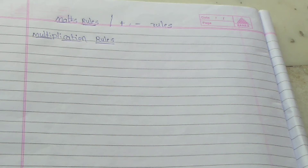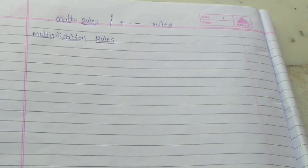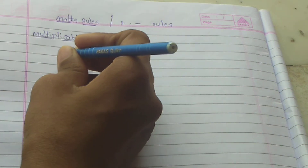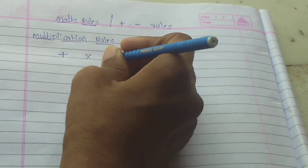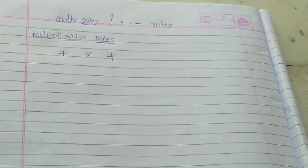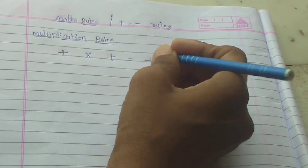Subscribe to my channel and share my channel. Today's topic is non-mass rules for positive and negative numbers. First, the multiplication rules — there are 4 rules. The first is plus into plus.